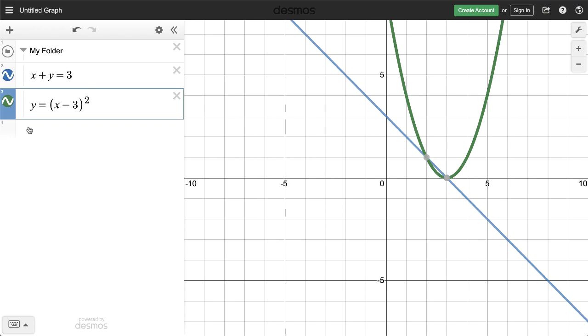Let's create a new expression outside of the folder by clicking in the space below. Notice there's no gray line on expression line 4. How about an ordered pair?